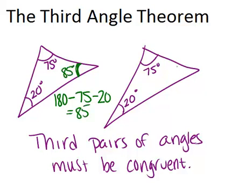Now if we wanted to find the third angle in the other triangle we would do the same exact calculation, so we would also end up getting 85. So of course, the third pair of angles are congruent as well.